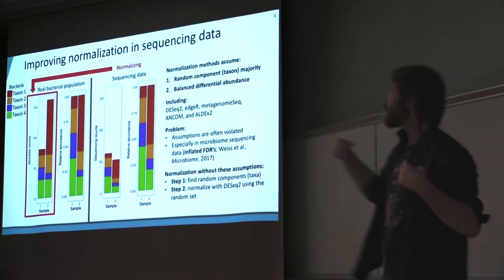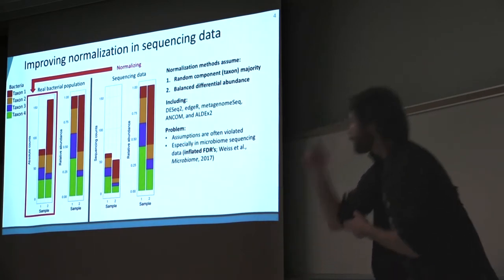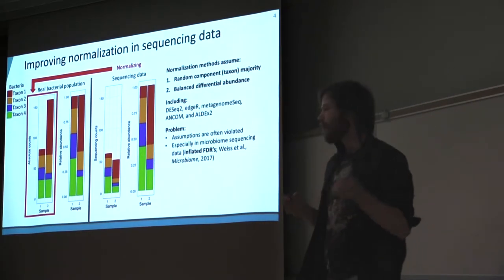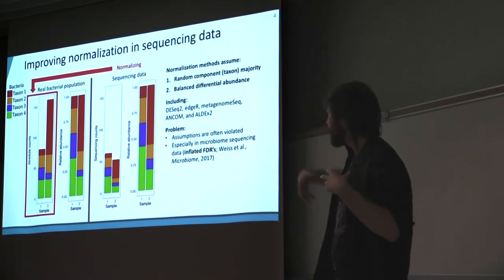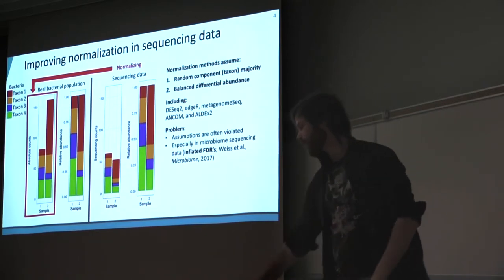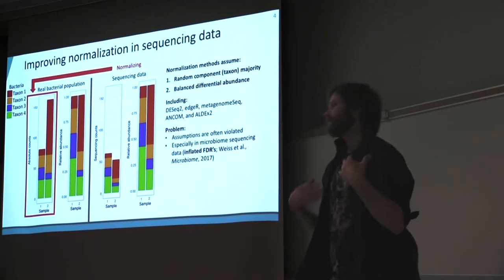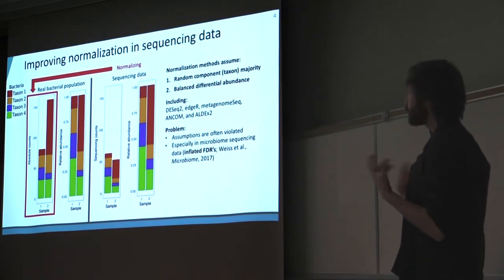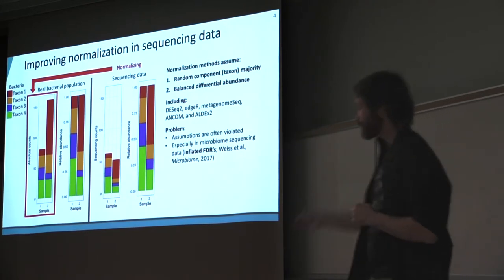The problem is that these assumptions are very likely to be violated in a lot of datasets, especially in microbiome datasets. A simulation study by Weiss and Allen 2017 found that when these assumptions are violated, false discovery rates go up when trying to detect differentially abundant bacteria. So the solution I've developed is an algorithm that does not have these two assumptions.